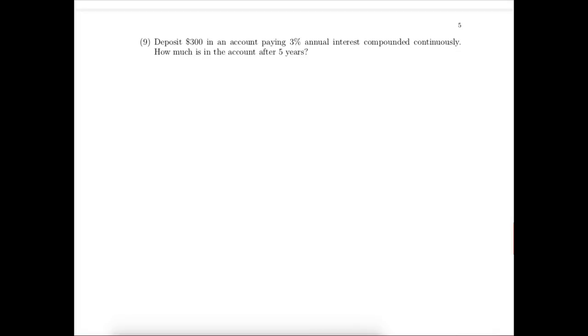Here's our next problem. Because this is a continuous compound interest formula, the right formula is A equals P times E raised to the RT power.